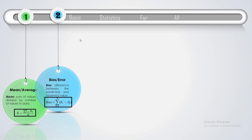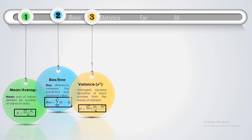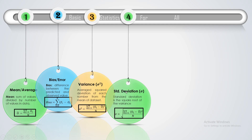When you calculate the difference between these two columns, you get a third column — that is the difference, or bias, or error. Coming to the third parameter — variance — it is denoted by sigma squared. It is the average squared deviation of each number from the mean of the data set. And the fourth one is standard deviation, denoted by sigma.